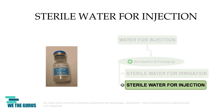Sterile water for injection is packaged in single-dose containers of type 1 or type 2 glass. The containers can vary in capacity but cannot exceed 1 liter. Therefore, limitations of total solids depend on the size of the container. This water is used for processing of sterile products that are intended to be used intravenously, and it can also be used for compounding.